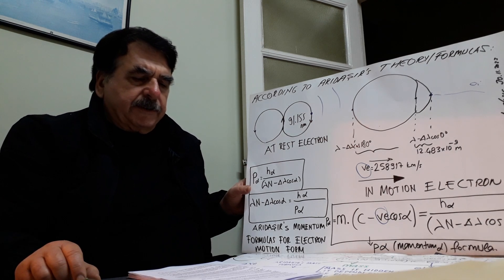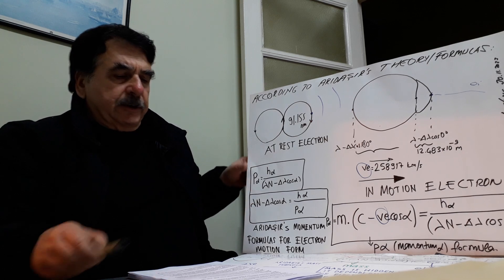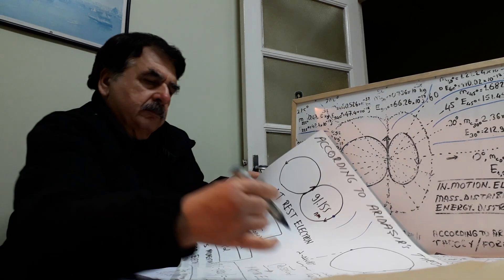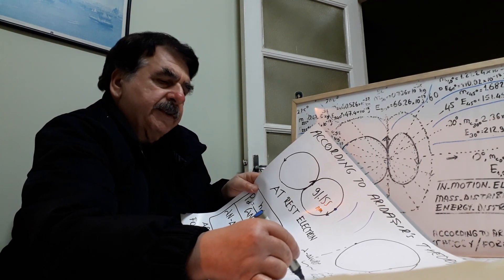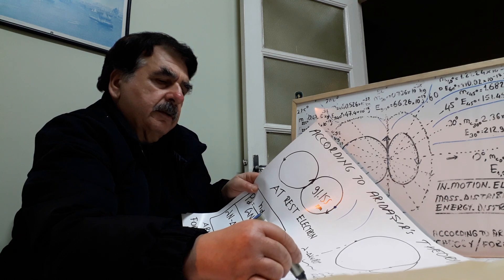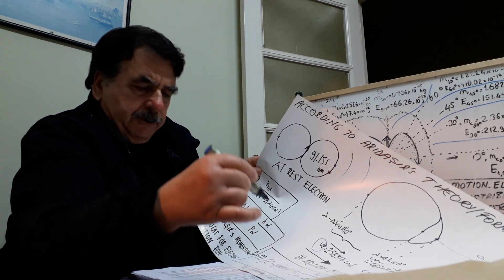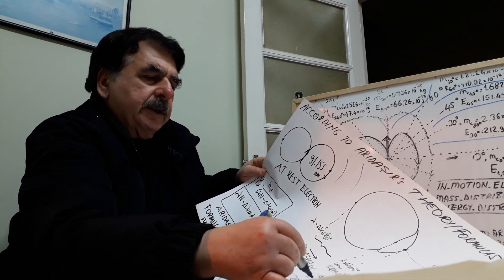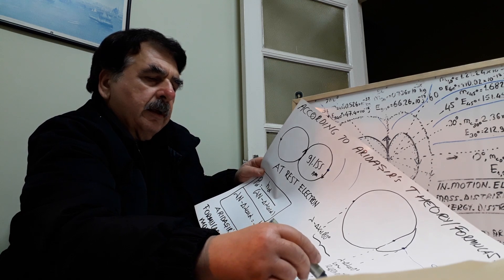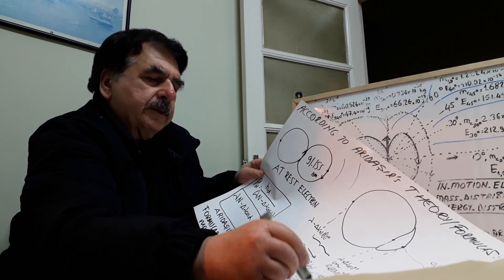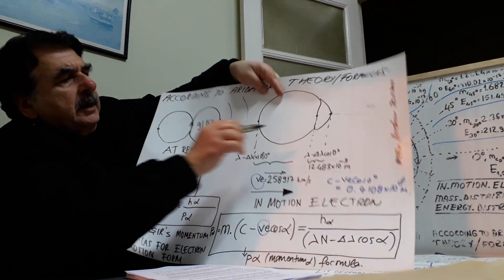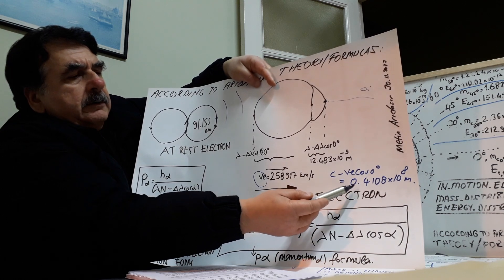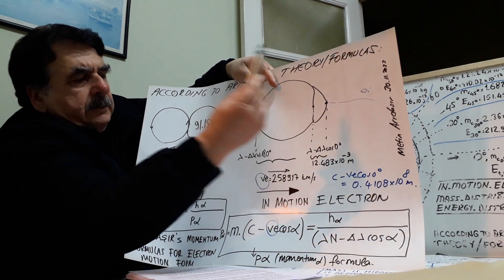And in the same direction, the wave velocity will decrease from the speed of light. c minus c·v·cos(0°) will be equal to 0.41 × 10⁸ meters per second. In the same direction, the wave velocity will be 0.410 × 10⁸ m/s, etc.